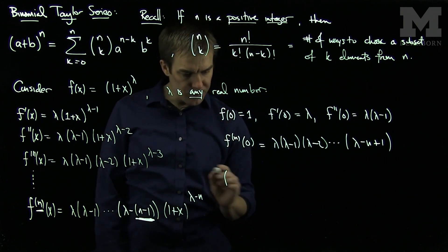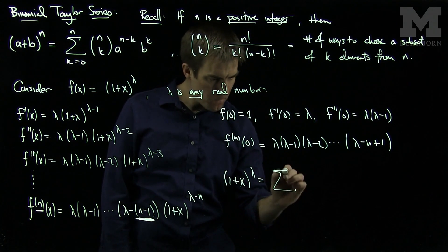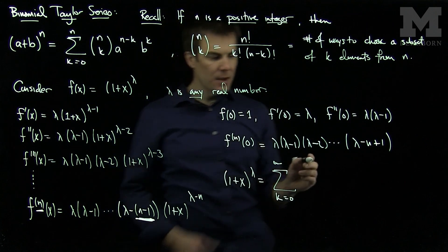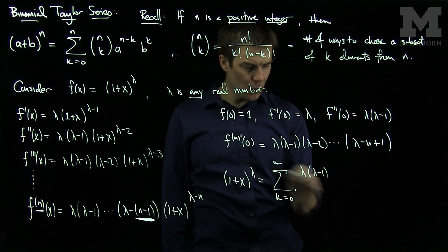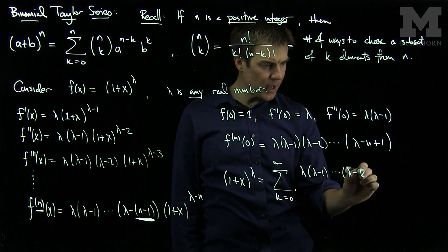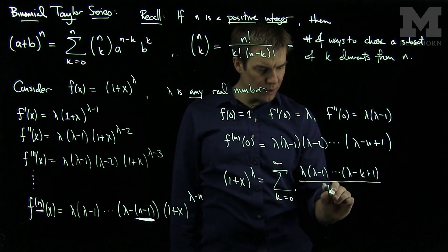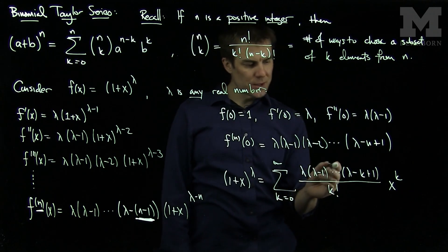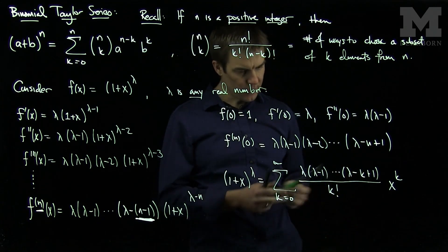So we can write the expansion: (1 + x)^λ for any λ equals the sum as k goes from 0 to infinity of [λ(λ−1)···(λ−k+1)] divided by k factorial, times x^k. The numerator product is referred to as a falling factorial.